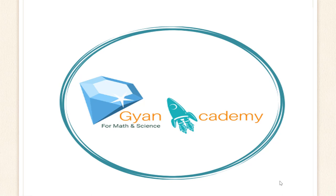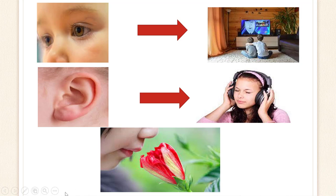But before that, I wanted to ask you all a question. As we know, different parts of our body help us to do different types of work. Like, our eyes help us to observe things, our ears help us to listen to sound, our nose helps us to get the smell. Similarly, which part of our body helps us to grind and chew the food? If your answer is teeth, then you are right.